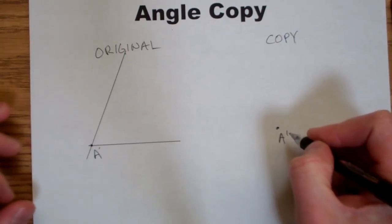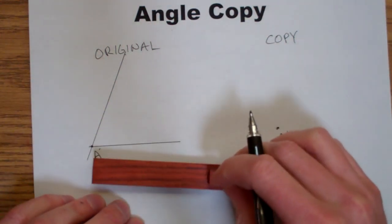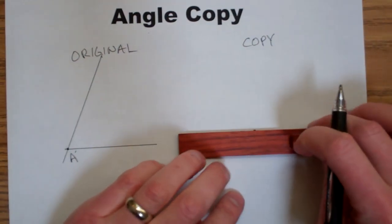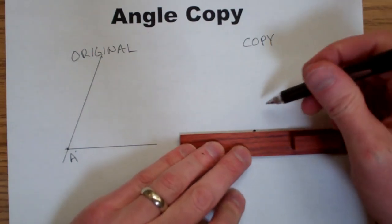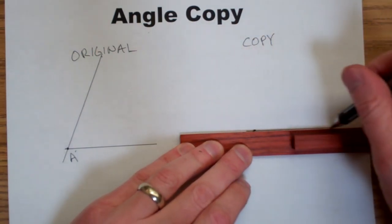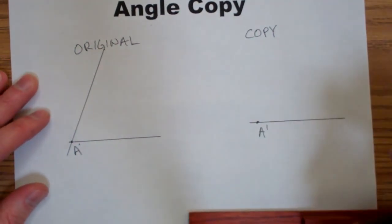This will be A prime. Then I'm going to copy the bottom side of the angle, just by drawing a line and making sure that it goes through point A prime.